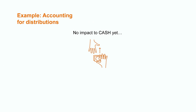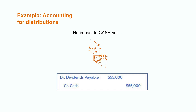Fast forward to the next month when the cash actually changes hands — this is when the cash account is impacted. At this time, there would be an additional entry in the accounting records where we clear out the liability with a debit to the dividends payable account and see a corresponding $55,000 decrease to the company's cash account. With that, all of the accounting entries related to this particular corporate distribution are now complete and accounted for within the financial statements.